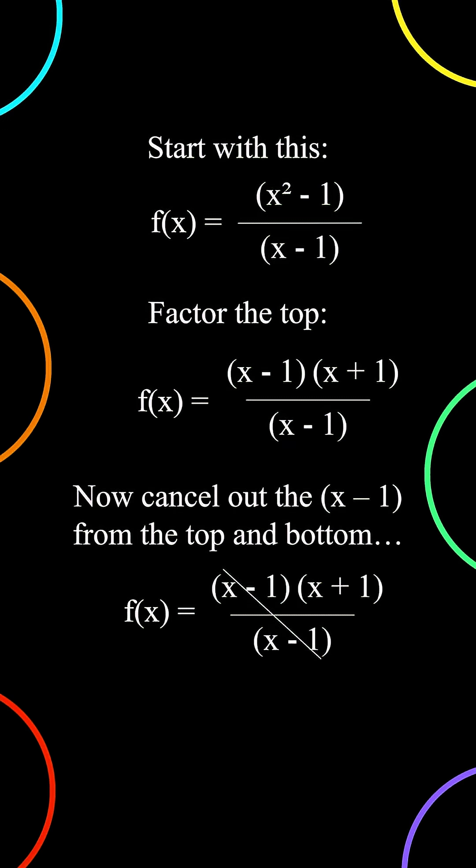Now cancel out the (x - 1) from the top and bottom. But wait—when something cancels but is in the denominator, that's a hole.